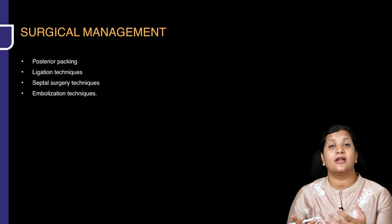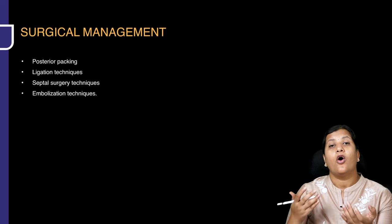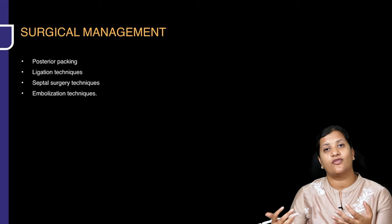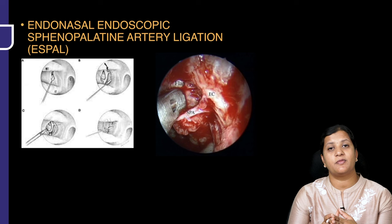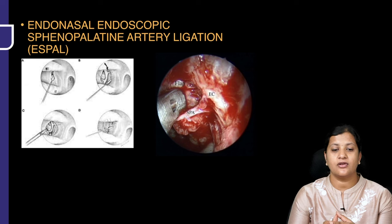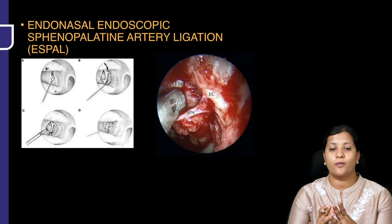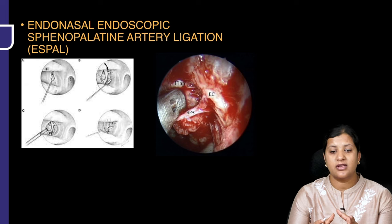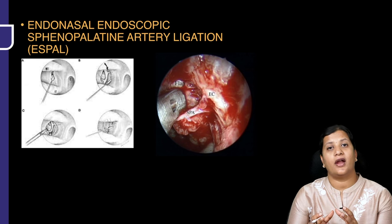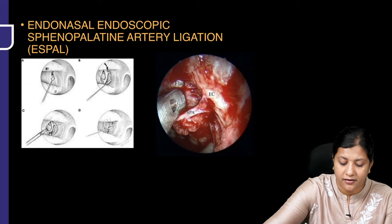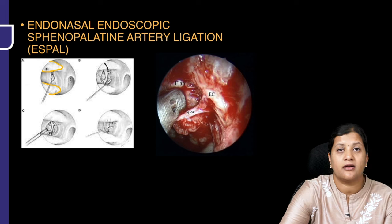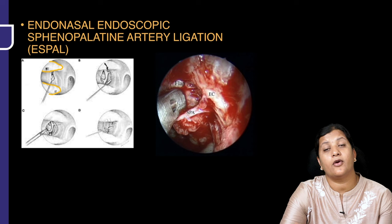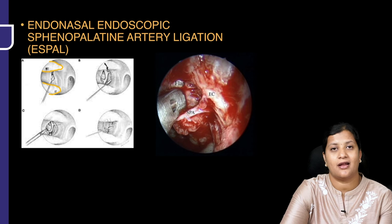If spinopalatine artery ligation fails, consider septal surgery such as SMR, or embolization of the feeding vessel via angiography. SPAL stands for endonasal spinopalatine artery ligation. To identify the spinopalatine artery, the first landmark is the middle turbinate — below it is the inferior turbinate, above is the middle turbinate.